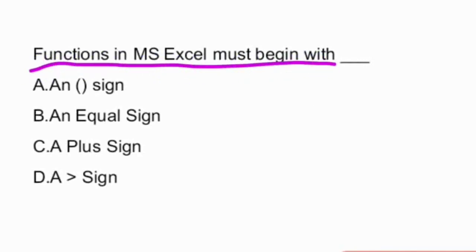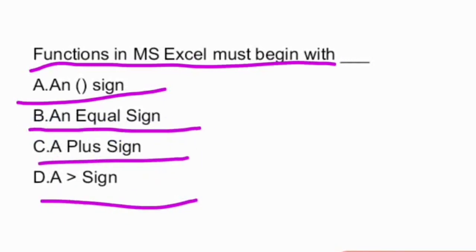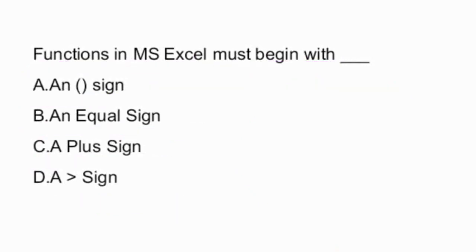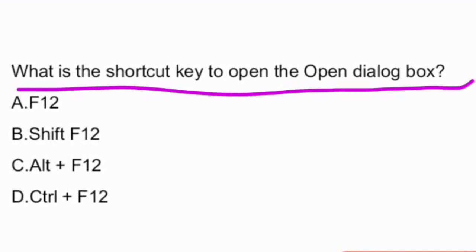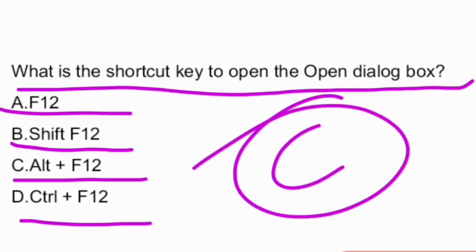The answer is MS Excel — option B is the right answer. Next question: functions in MS Excel must begin with — options are: and bracket sign, equal sign, plus sign, greater than sign. And the answer is option B — it should start with an equal sign. Next question: what is the shortcut key to open the Open dialog box? Options are: F12, Shift+F12, Alt+F12, Ctrl+F12. And the answer is option D — Ctrl+F12.